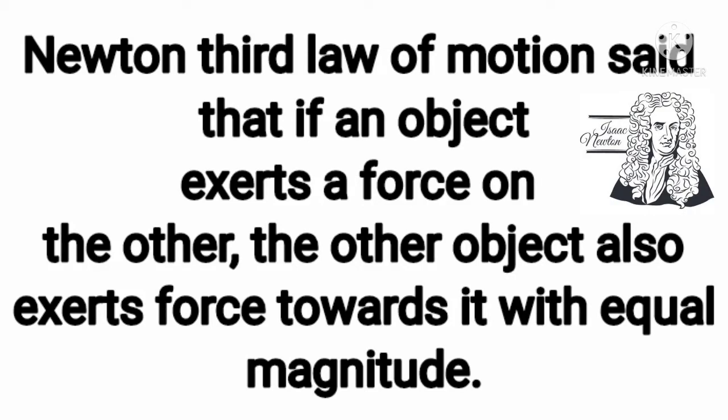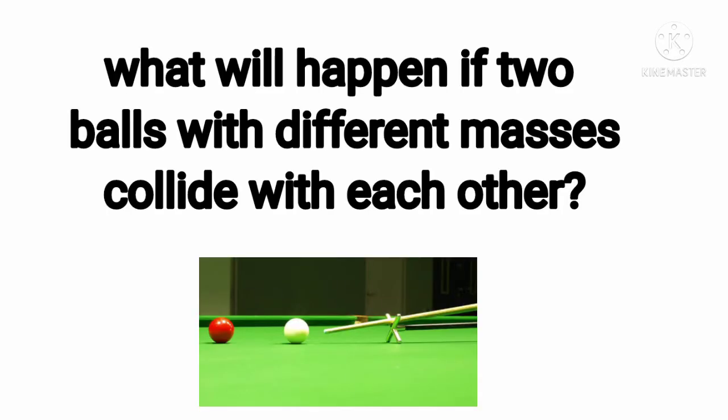Newton's third law of motion states that if an object exerts a force on another, the other object also exerts a force toward it with equal magnitude. What can happen if two balls with different masses collide with each other?